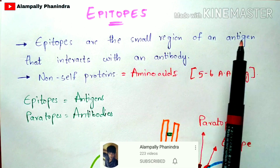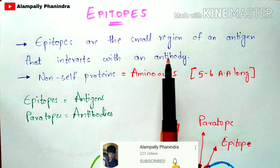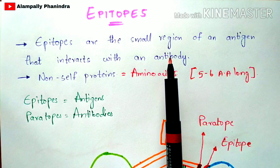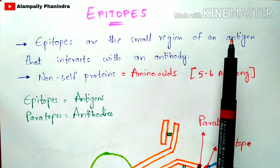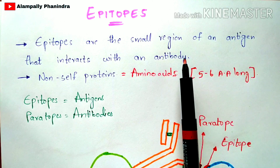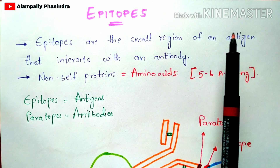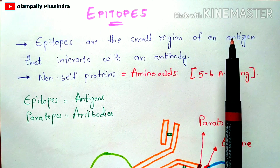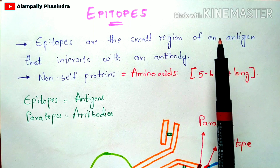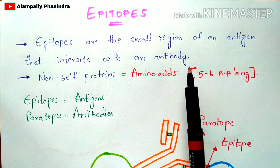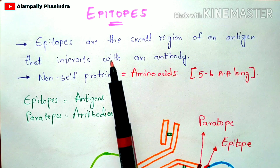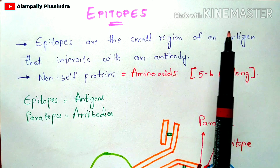Once a harmful antigen enters the human body, our immune system starts releasing antibodies against these antigens. These antibodies are released from white blood cells — specifically from the serum. Once the antibodies are released, they bind to the antigens and kill them, so there will be no more infection caused in our body. This antigen becomes non-functional and cannot cause any harm. That is the basis of antigen-antibody interaction.